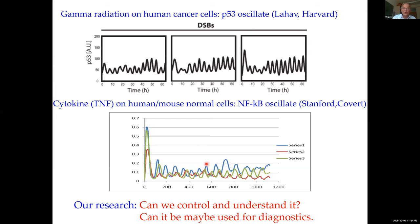To show exactly what kind of data we work with: this is from Galit Lahav's group at Harvard — she has been a pioneer in studies of P53 oscillations. When you do double-strand breaks, you see that the level of P53 in single cells oscillates nicely and smoothly over actually many days.